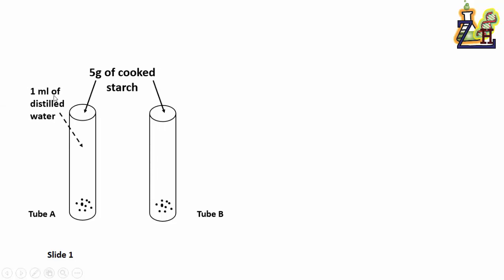Add 1 milliliter of distilled water to tube A. Add 1 ml of distilled water to tube B and salivary amylase.